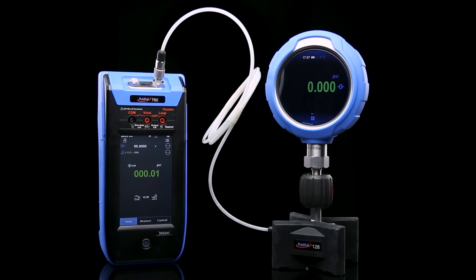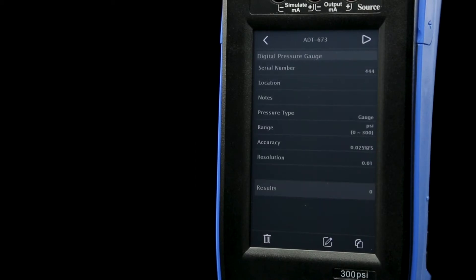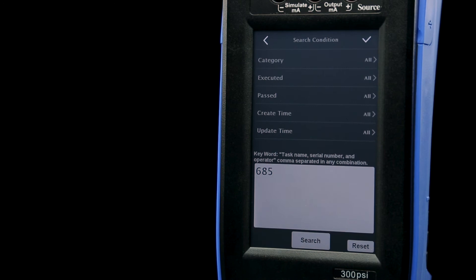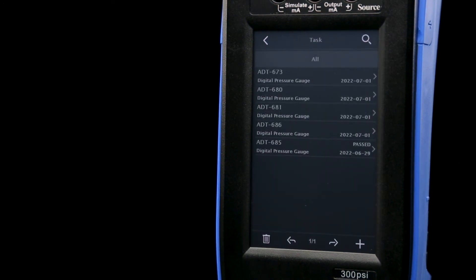When it comes to pressure calibration, test procedures can be saved and automated for your specific devices, to be run at the press of a button. These procedures can also be recalled later from the task library, ensuring that you never have to set up the same test twice.